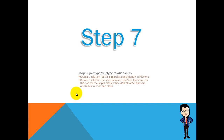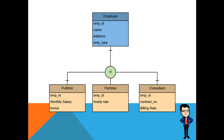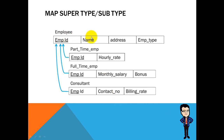Step seven: map supertype and subtype relationships. Create a table for the superclass and identify a primary key for it. Create a table for each subclass — its primary key is the same as the one for the superclass entity — and add all other specific attributes to each subclass. For example, superclass employee with three subclasses: full-time, part-time, and consultant. We create a table for the superclass employee and three separate tables for the subclasses, each sharing the same primary key as the superclass, plus their specific attributes.